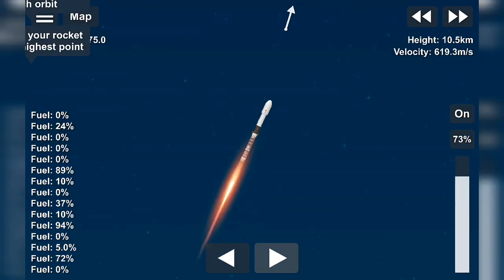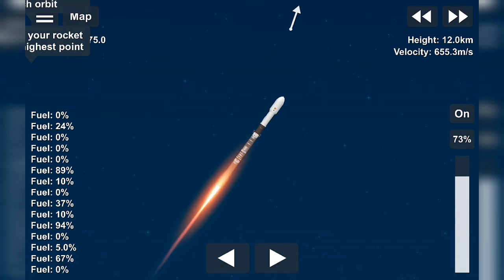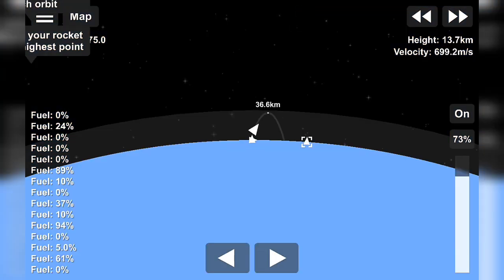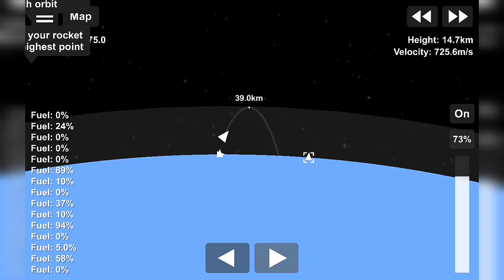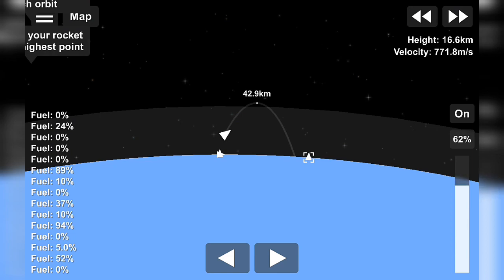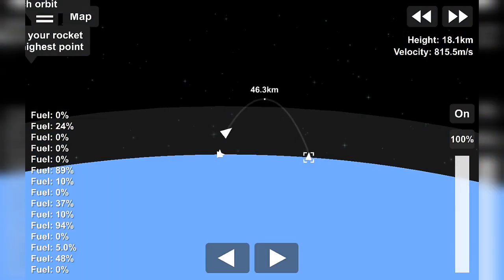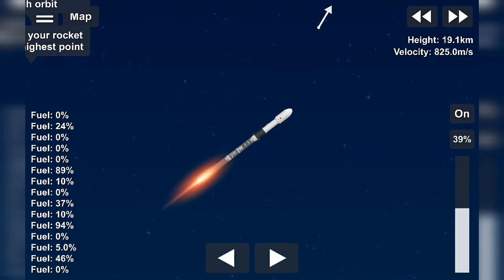In about a minute we have three events coming up in quick succession. First up is main engine cutoff where the nine engines on the first stage will shut off, followed by stage separation where the first and second stages will separate from one another. Shortly after that we'll have second engine start one. The Merlin vacuum engine on the second stage will ignite its engine and continue its journey into orbit.